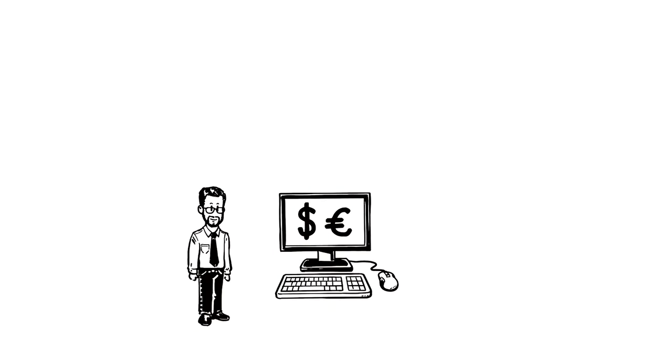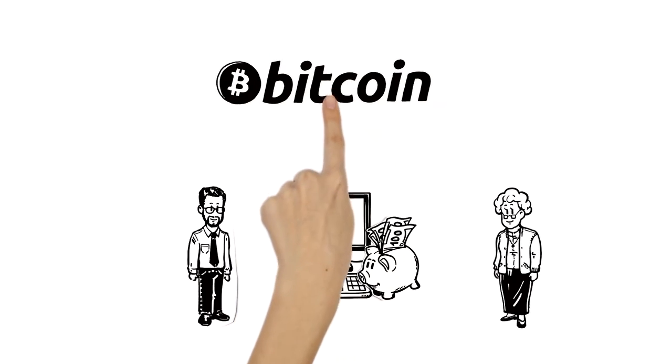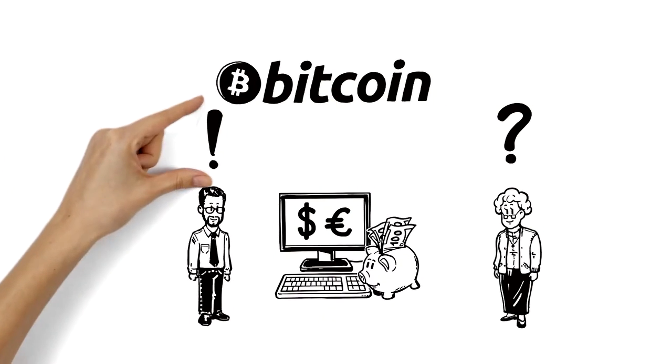He works with online payment, and his grandmother Margaret has just begun banking online. She's heard of Bitcoin, but doesn't know what it is. Matthew can explain.